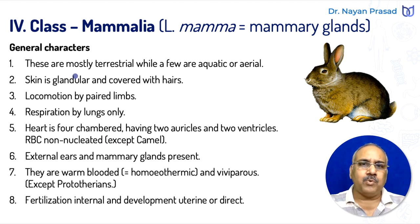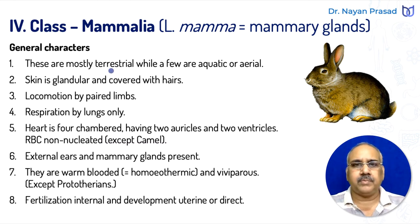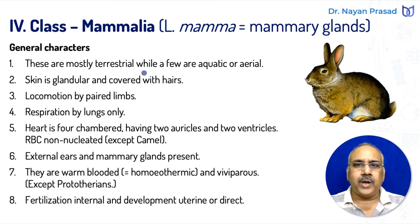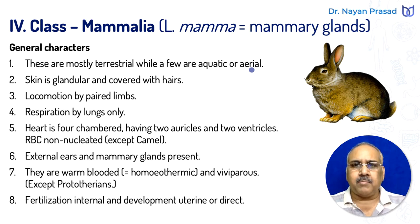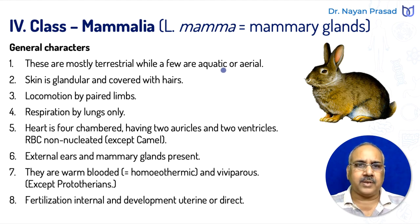Let us see the general characters of Class Mammalia. Mammals are mostly terrestrial, living on land. Basically terrestrial, while a few are aquatic or aerial. The aerial mammal example is bat, and the aquatic mammal example is whale.